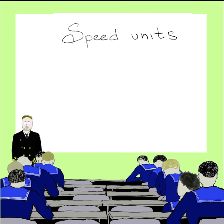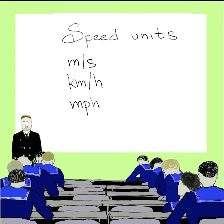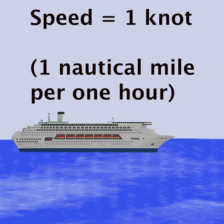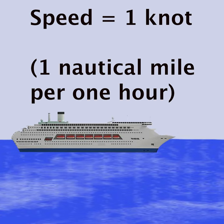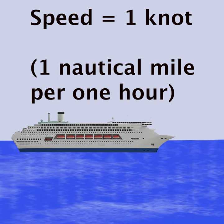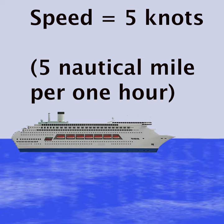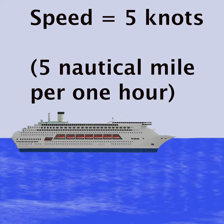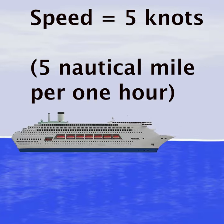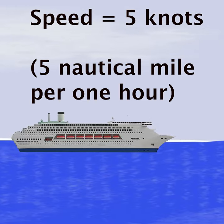In order to measure a ship's speed it is common to use a special unit of measurement, and it is called the knot. When we say our speed is 1 knot, it means we are moving 1 nautical mile per hour. And when we say our speed is 5 knots, it means we are moving 5 nautical miles per hour.